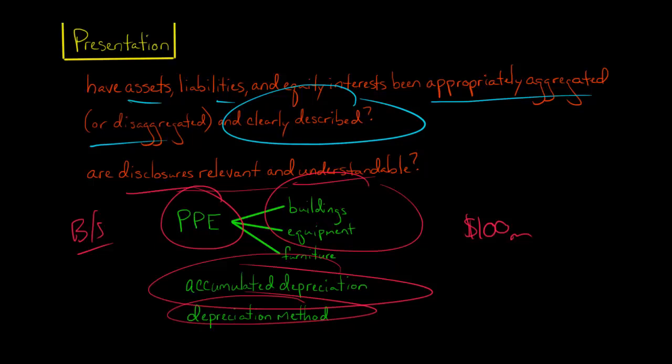So you've got these disclosures to make it very clear and understandable for the investor of what's going on with the ending balance of this PP&E account. What does it include? What's it comprised of?